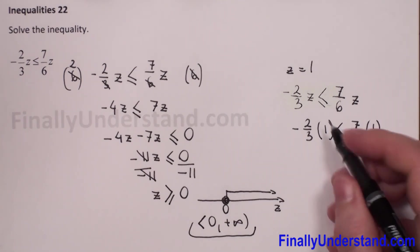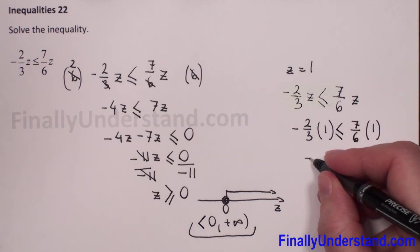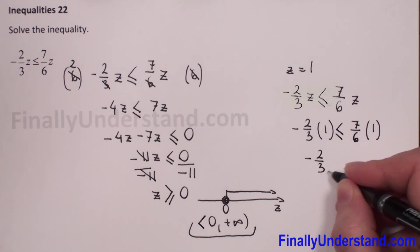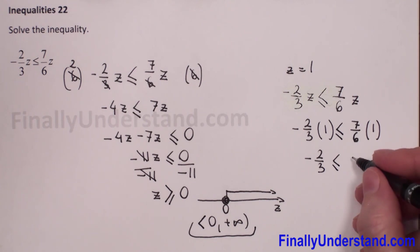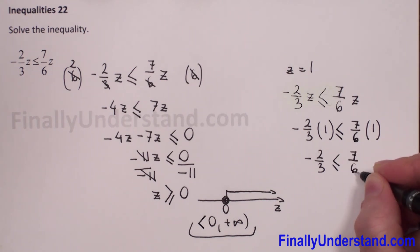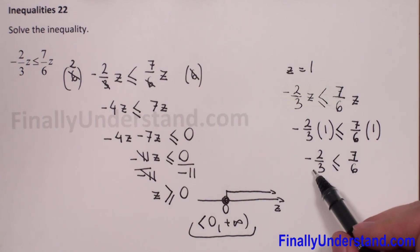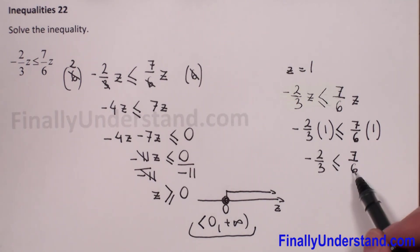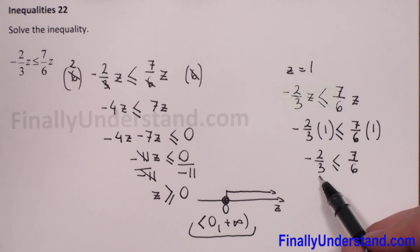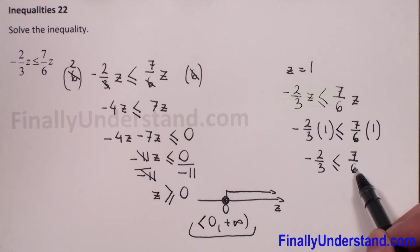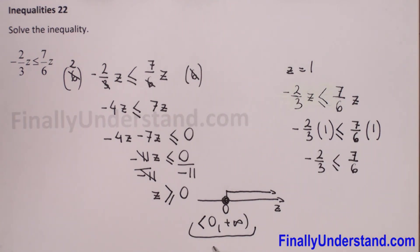Two thirds times 1 gives us negative 2 thirds is less than or equal to 7 over 6. As you can see, on the left side we have a negative number and on the right side we have a positive number. It means the left side is less than the right side, so this inequality is true and our solution is correct.